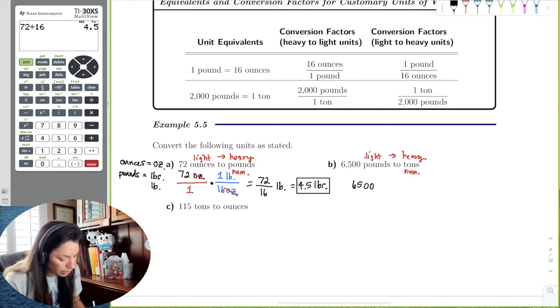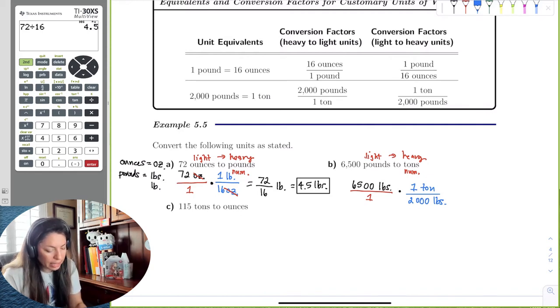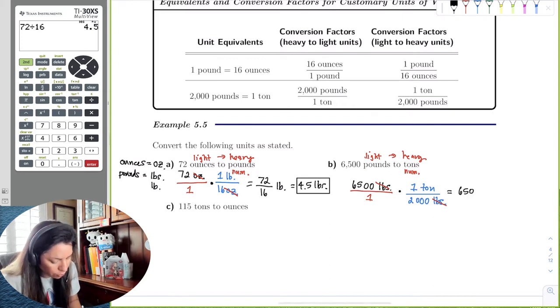So the process is start with what's given to you, 6,500 pounds, throw it over one to be consistent, and let's multiply by a conversion factor. So the conversion factor would have been one ton over 2,000 pounds. We can see that the pounds reduce out, and I'm left with 6,500 tons times one, which is 6,500, divided by one times 2,000, which is just 2,000 and then pounds.